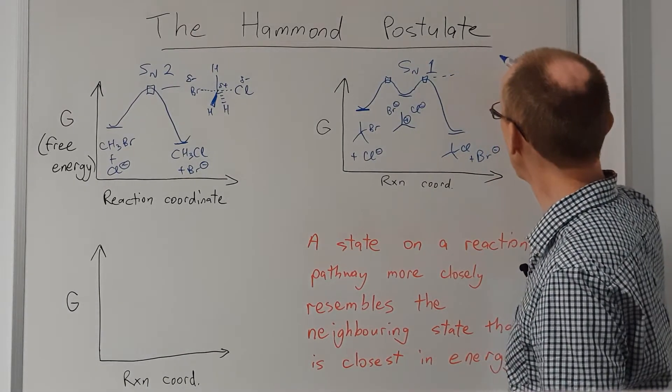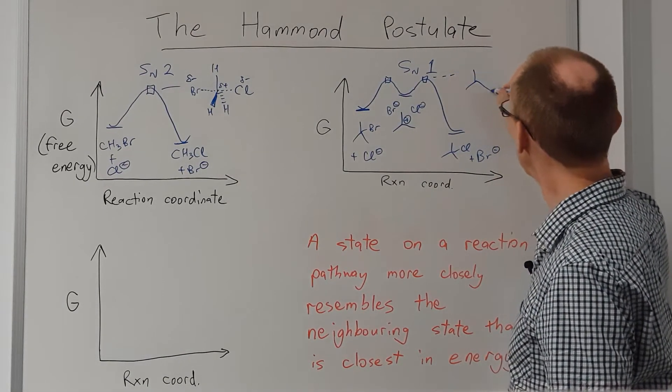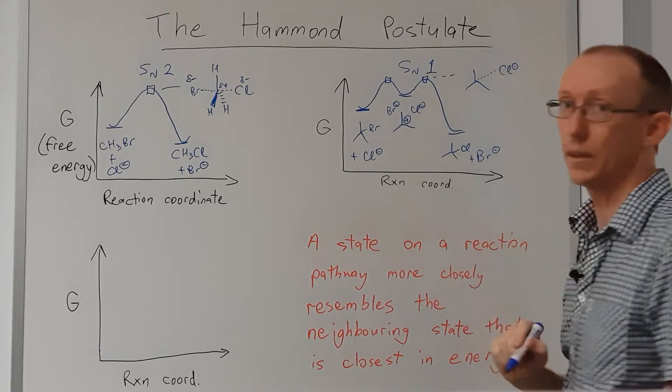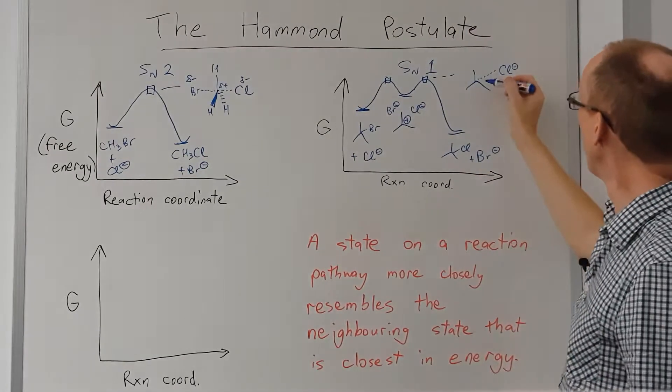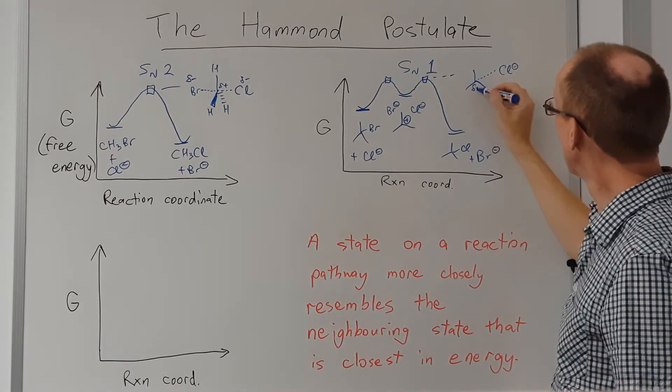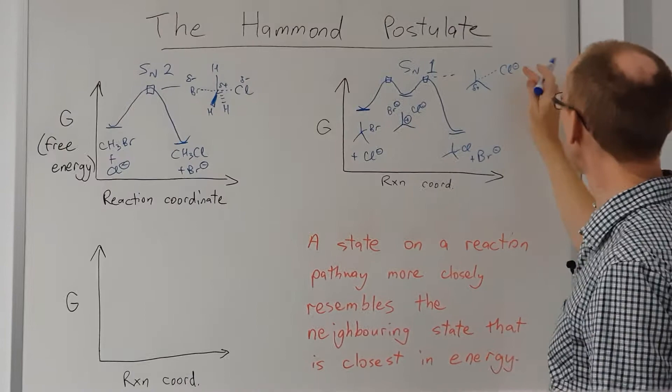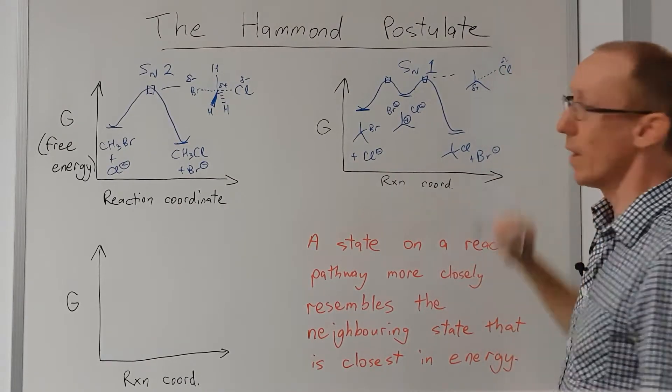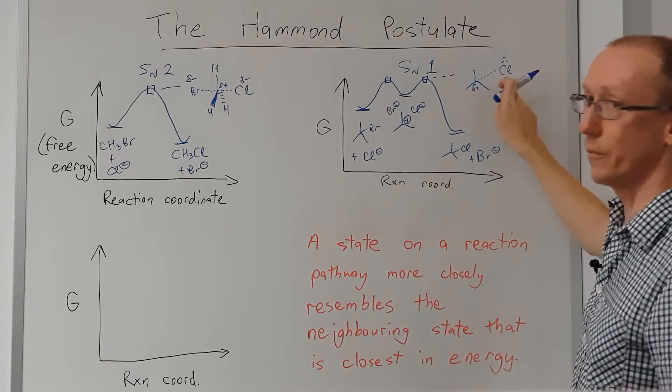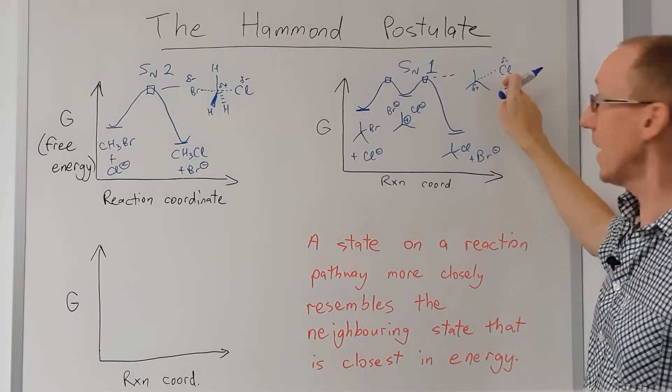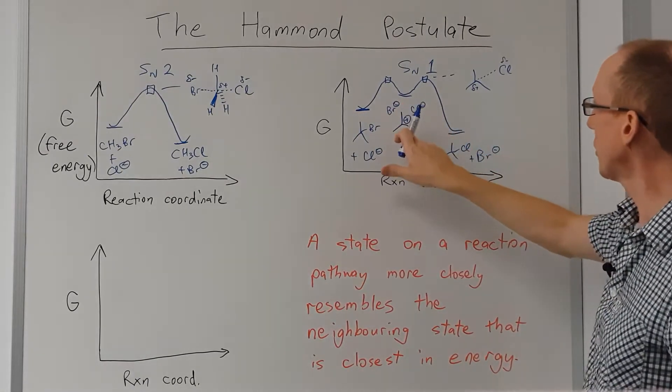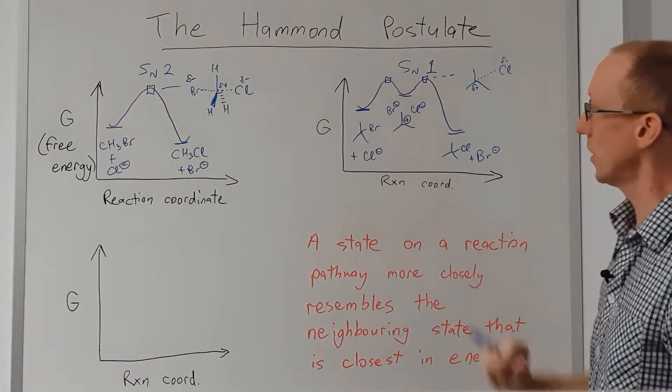For example, this one here might look like a structure with a partially forming bond to the chloride and some partial positive character there, and maybe we'll put partial negative character here. But overall, this is going to very much look like a chloride anion interacting with a tert-butyl carbocation. It's a very similar structure to this intermediate because they're close in energy.